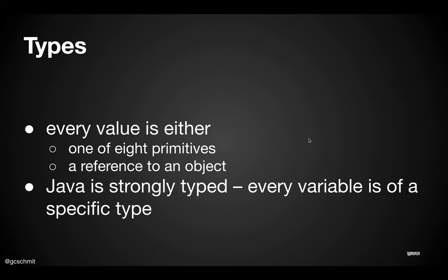Alright, so to set the stage and review a little bit, we already know that in Java every value has a type. And that type is either a reference to an object, like a reference to a turtle, a string, a vending machine, or it's one of eight primitives.